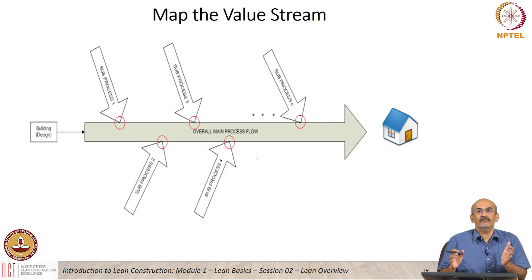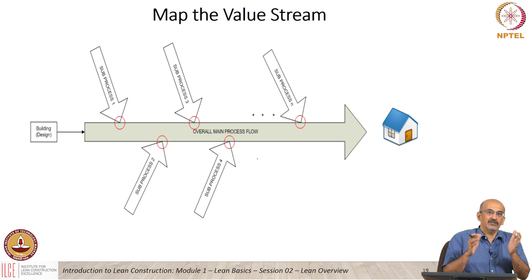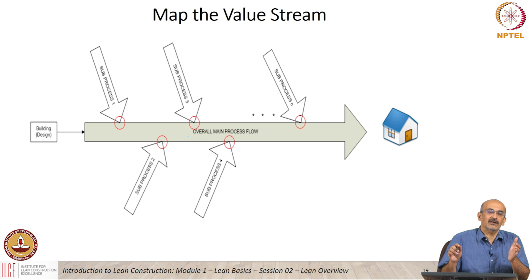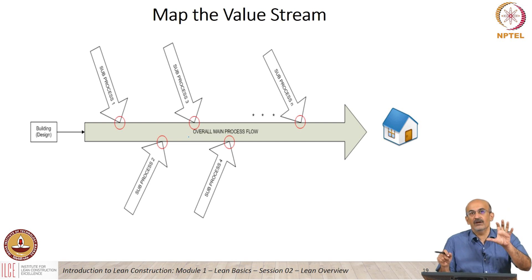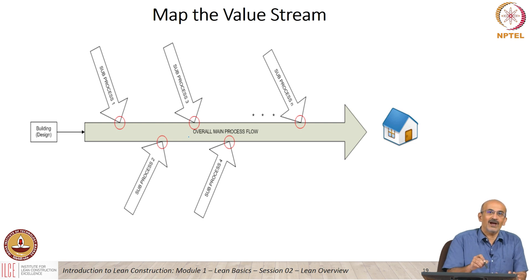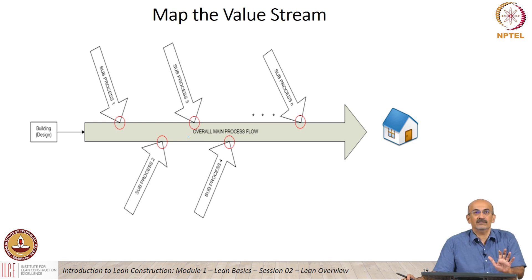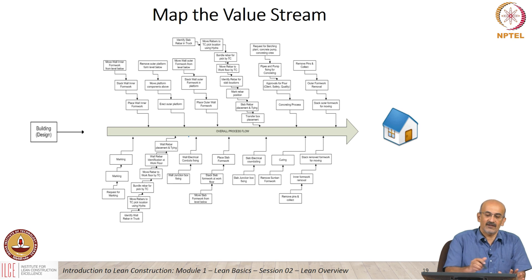When we go to mapping the value stream, we have to recognize that although we talk about construction as a project, there are processes involved. Looking at how we model construction as a process — each activity in our CPM is not just a start and finish, but within it, it has several processes to be able to finish the activity successfully. How do we actually identify the processes? How do we map where value is added in the processes? Here is a very broad level of processes and sub-processes, but as you get more detail, you can see there can be several sub-processes that go into the same macro process.